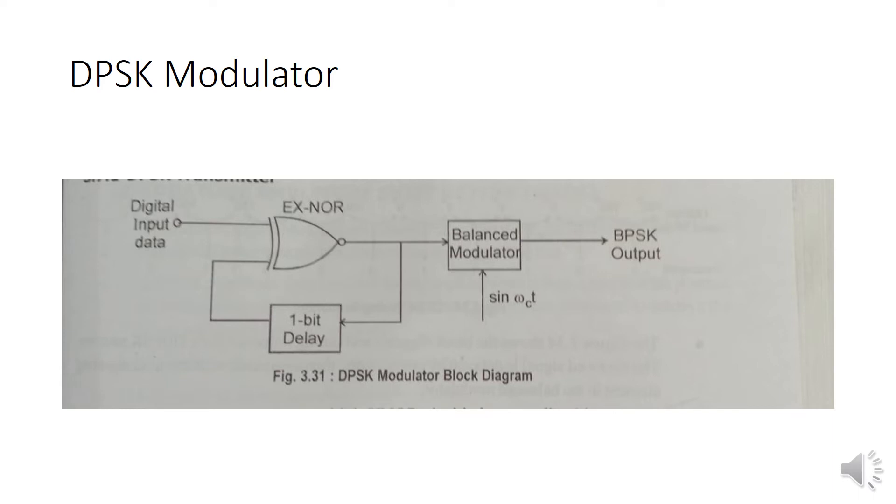The process carried out in the DPSK transmitter is that an incoming information bit is XORed with the preceding bit prior to entering the BPSK modulator. For the first data bit, there is no preceding bit. Therefore, an initial reference bit is assumed.